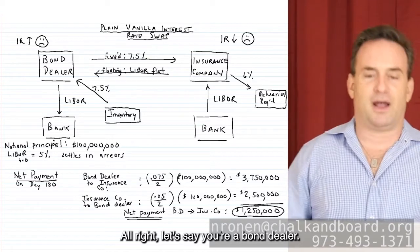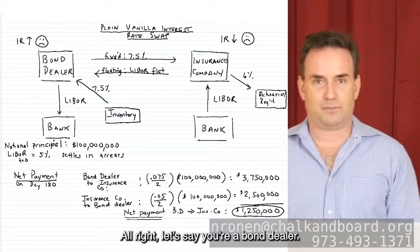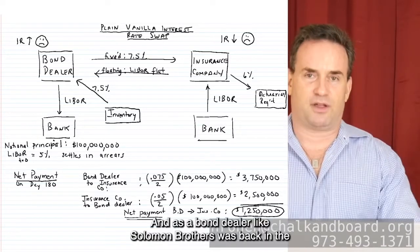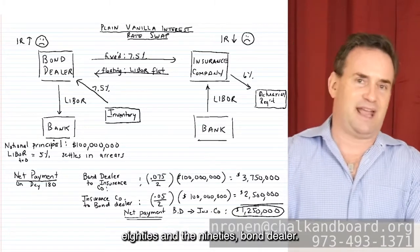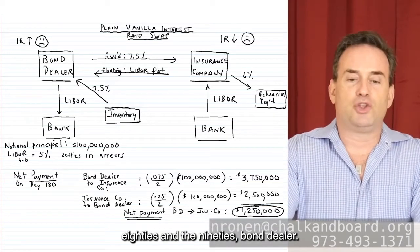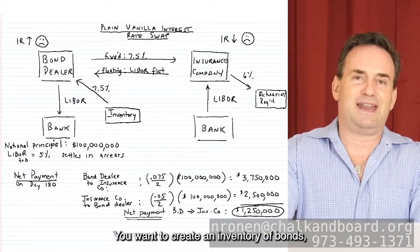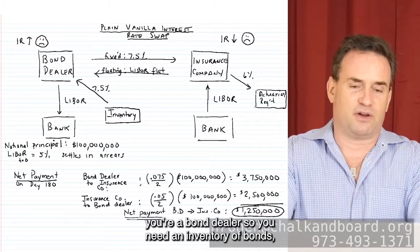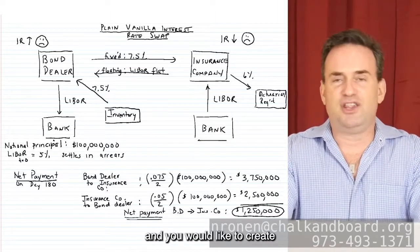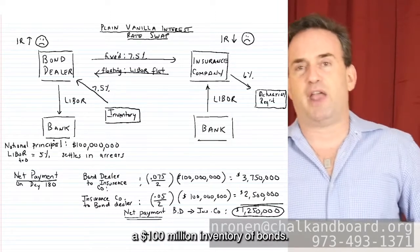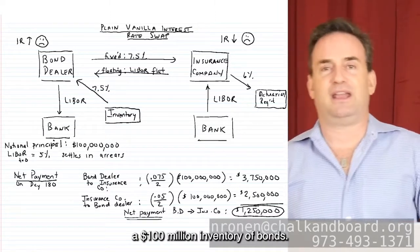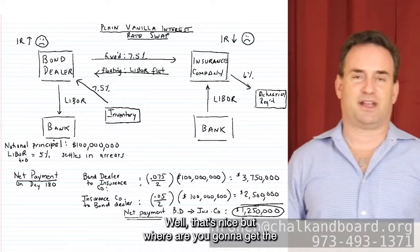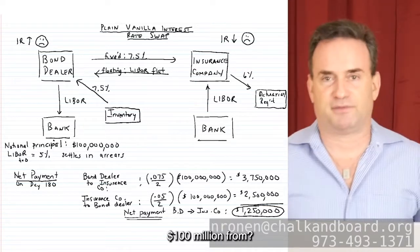Let's say you're a bond dealer — like Solomon Brothers was back in the 80s and 90s. As a bond dealer, you want to create an inventory of bonds, and you'd like to create a $100 million inventory. But where are you going to get $100 million from?